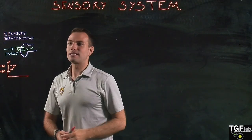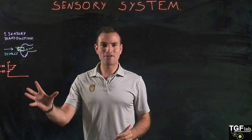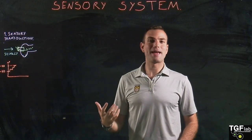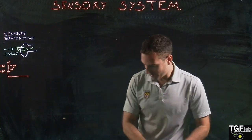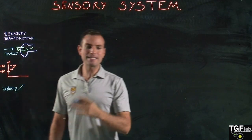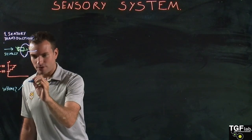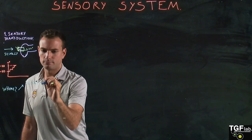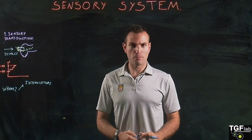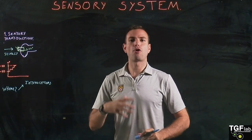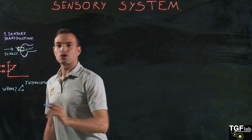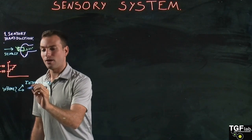We have different types of receptors that can be divided into different categories. One classification depends on whether they are inside or outside of our body. If they are inside our body, we call them interoceptors — these sense changes within the body such as metabolites, oxygen concentrations, pH, and different chemicals. If the receptors sense changes outside our body, they are called exteroceptors.